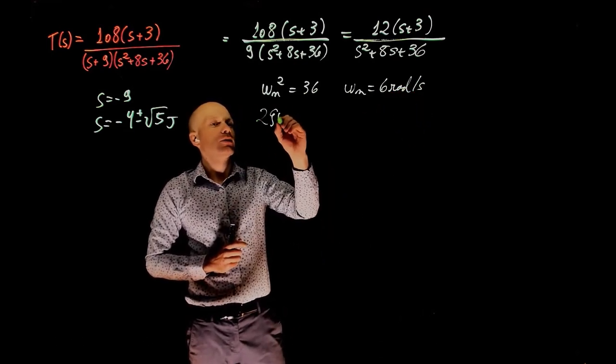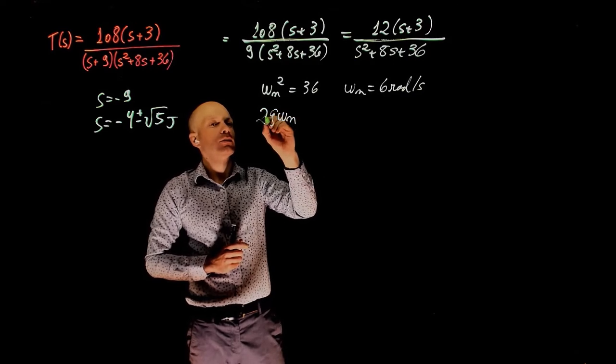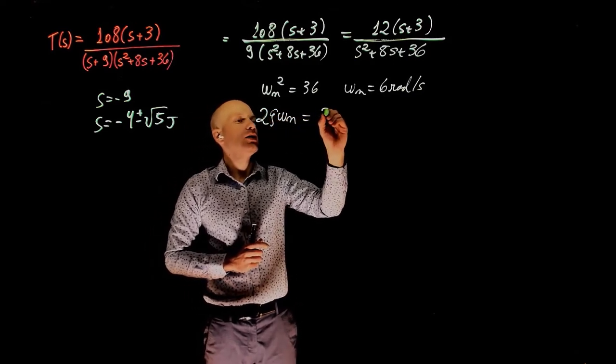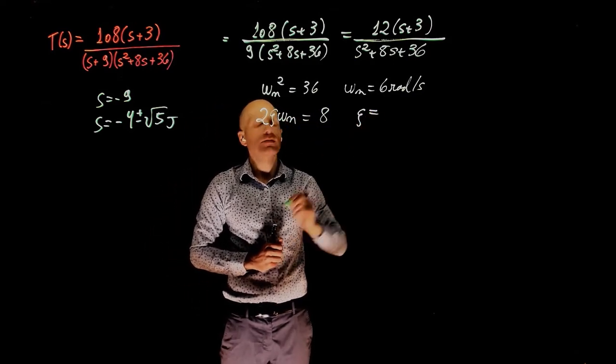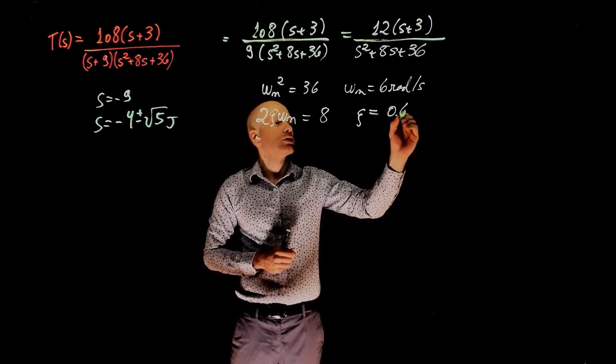And you know that 2 zeta omega n is 8, that gives zeta as 0.67.